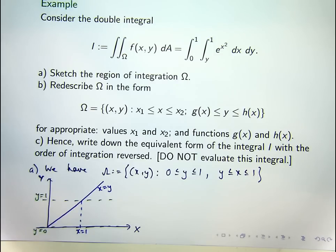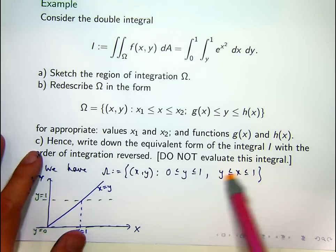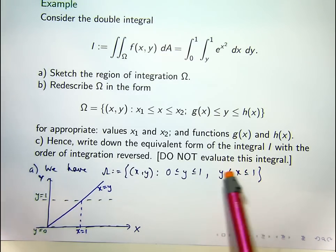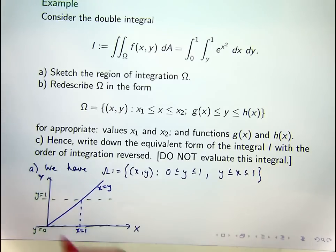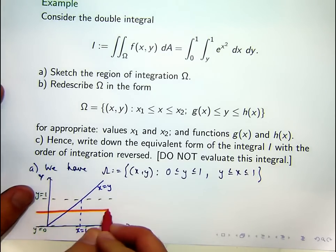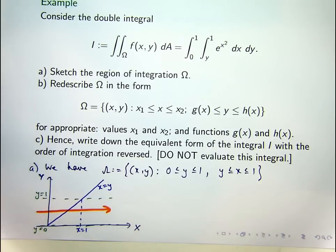Now you can see that the x is between two, like at least between one function, right? The y function and this constant function. So if I was to draw a horizontal line from left to right that sort of controls the varying of x.